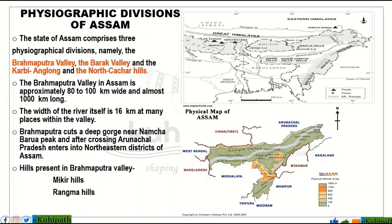The Brahmaputra Valley region has a northern bank and a southern bank. The total length of Brahmaputra Valley from east to west is around 720 km, and the total width is around 80 km.